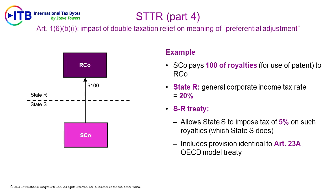For example, assume these facts: S Co, a company resident in State S, pays 100 of royalties for the use of a patent to R Co, a company resident in State R.